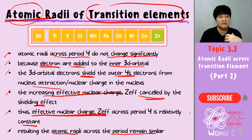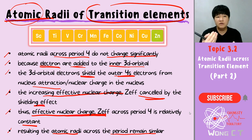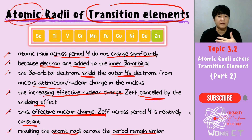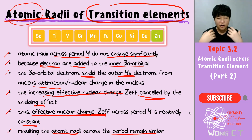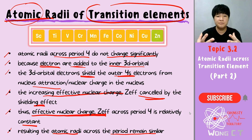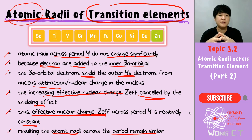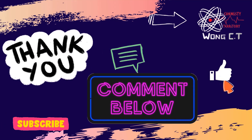This is a special case for transition elements, which is why I kept it in a separate video. If you want to look at the variation of atomic radii across a period and going down a group, you can watch the part 1 video. This video talks only about the atomic radii of transition elements. I hope after watching you are able to explain why the atomic radii across transition elements in period 4 remain relatively constant. If you still have any questions, ask in the comments below and I'll get back to you as soon as I can. Remember to like and subscribe to the channel — thank you so much for watching, I'll see you in the next video!